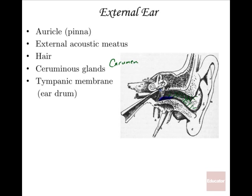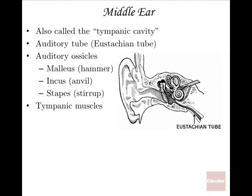That is the external ear. The middle ear runs from the inside of the tympanum — or eardrum — all the way to the bony labyrinth, which is made up of the cochlea and other parts. You can call it the tympanic cavity.